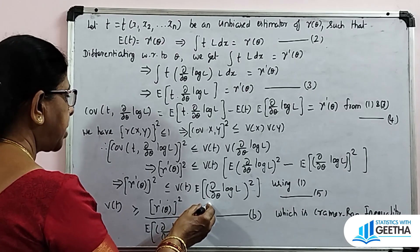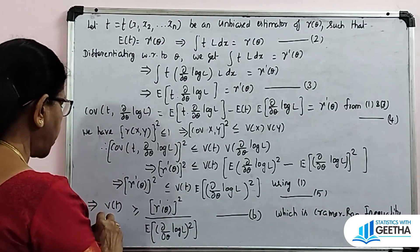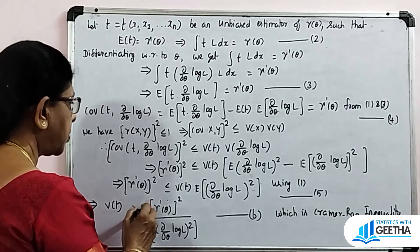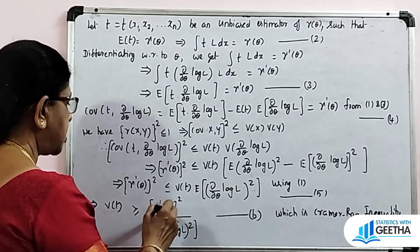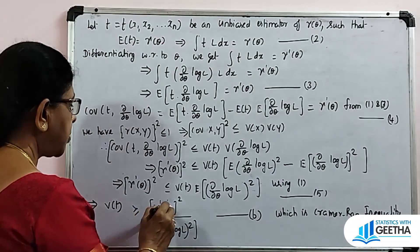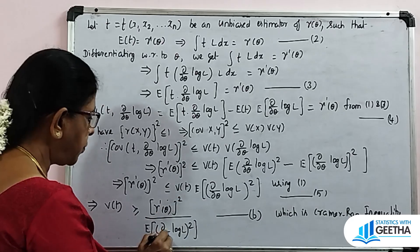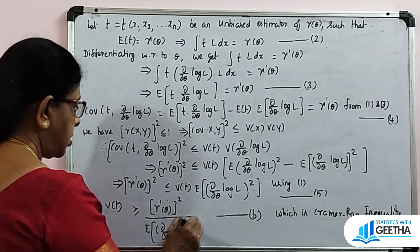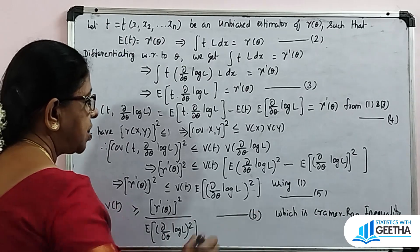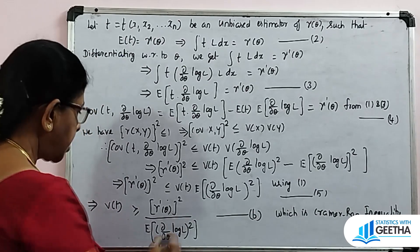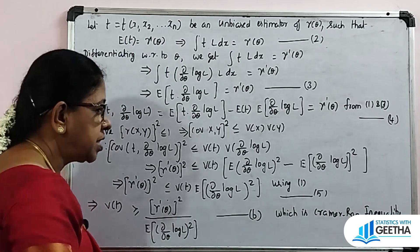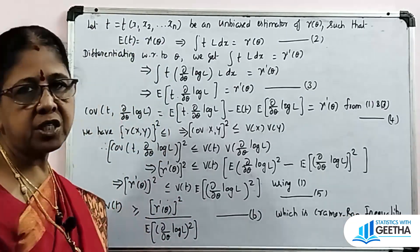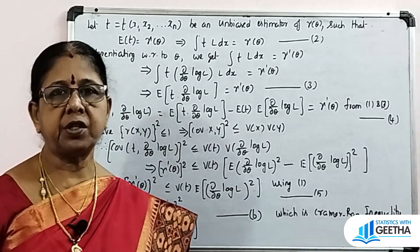From equation 5, we can isolate Var(t): Var(t) ≥ [γ'(θ)]² / E[(∂/∂θ log L)²]. This is equation number 6, which is the Cramér-Rao inequality. Hence, we have proved the Cramér-Rao inequality.